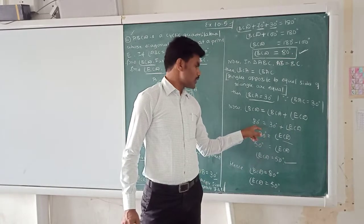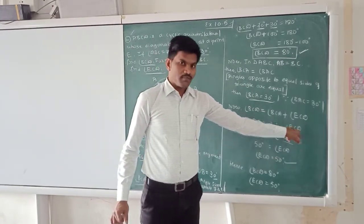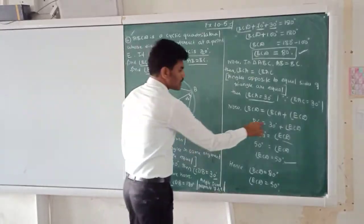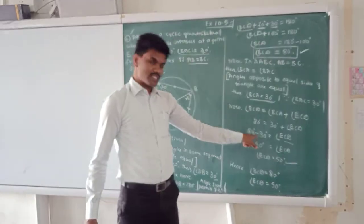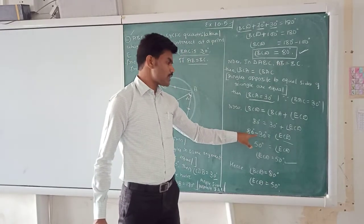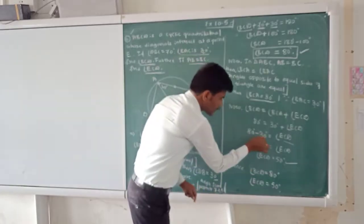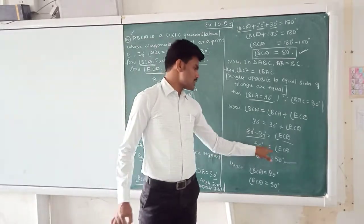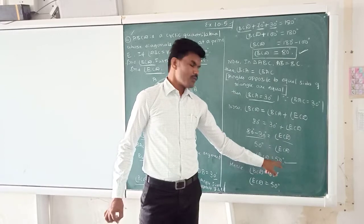So, 80 degrees is equal to 30 degrees plus angle ECD. Okay? So, we want that angle ECD. So, here plus 30 degrees is there, transfer it. So, what happens? It becomes minus 30 degrees. So, angle ECD, 80 minus 30 degrees is equal to angle ECD. So, 80 minus 30 degrees, you will get that 50 degrees is equal to angle ECD. Then, angle ECD is equal to 50 degrees.